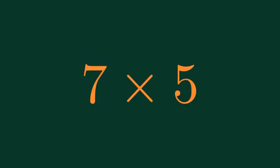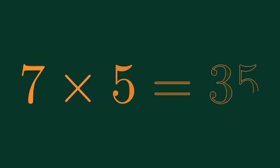What is 7 times 5? 7 times 5 is equal to 35.